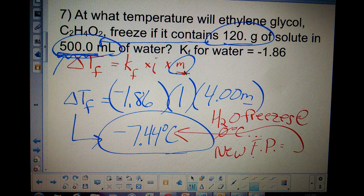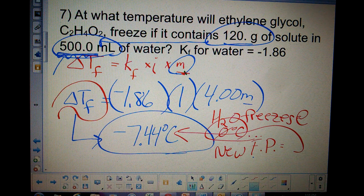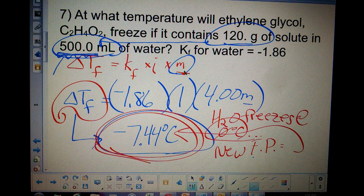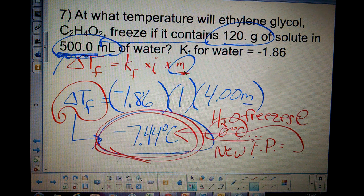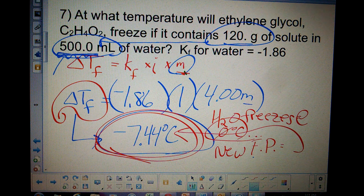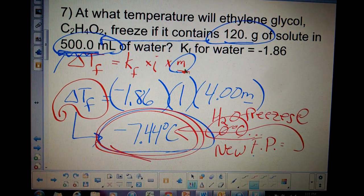The cool part about water is that it freezes at 0. So whenever you solve for the change in water's freezing point, it actually equals the new freezing point. So negative 7.44 degrees. It makes sense because it lowers the freezing point of water by 7.44 degrees. That's it.